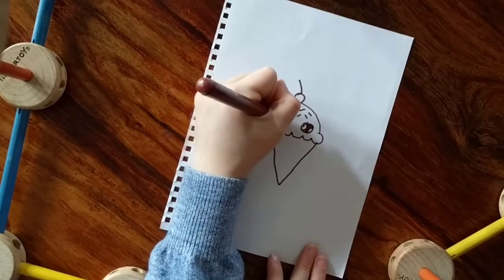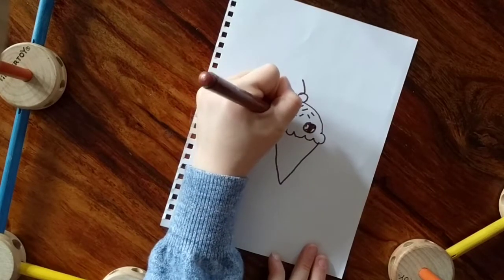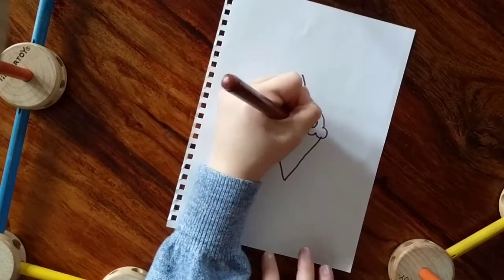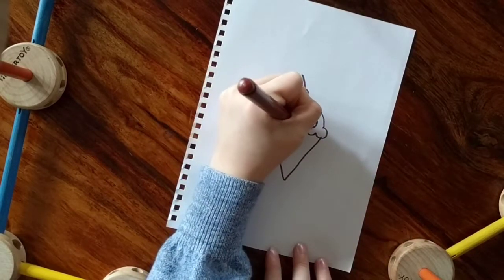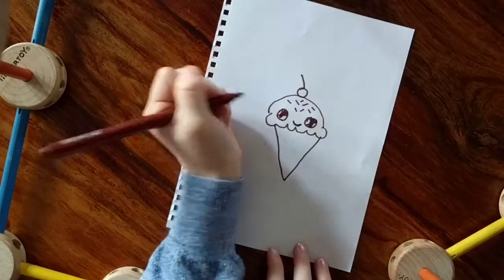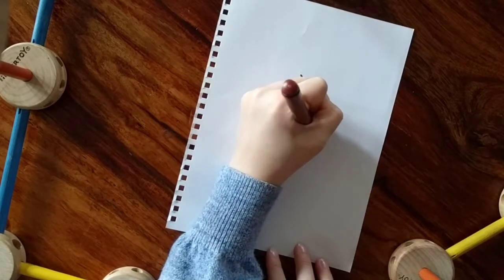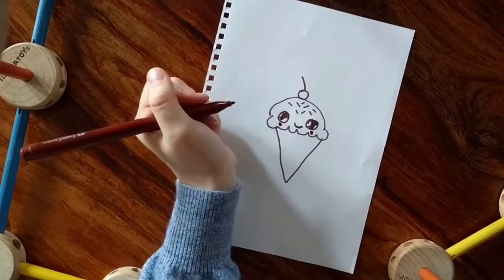Then do the same on the other side. And then it should look like that. But what are we missing? A smile. So draw a smile and it should look like that. Then draw two little circles on the bottom of the eye. So they're like cheeks.